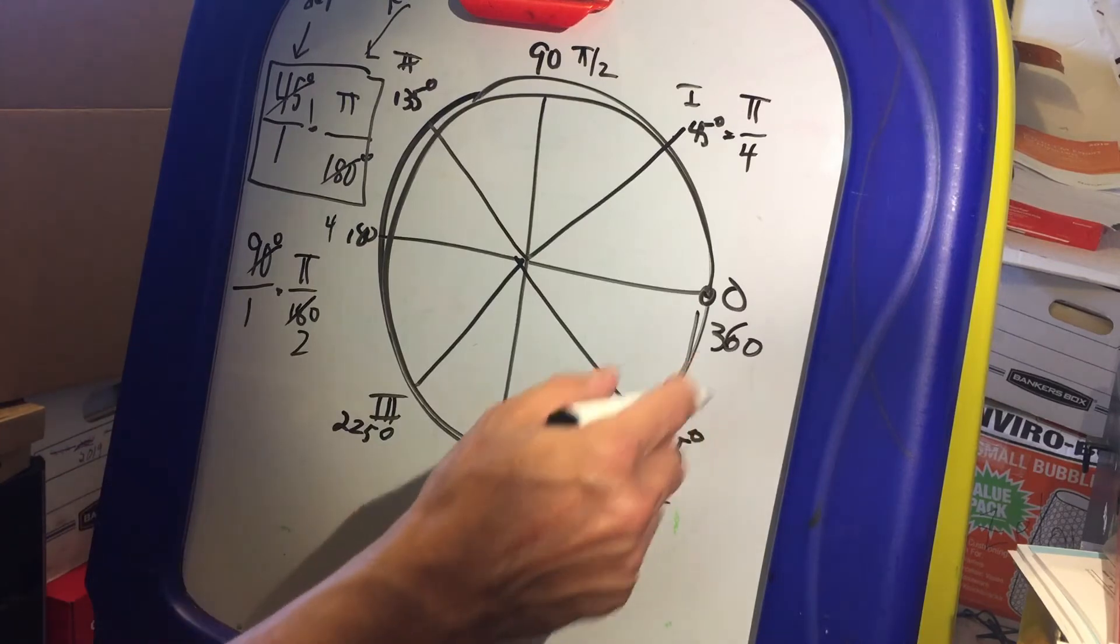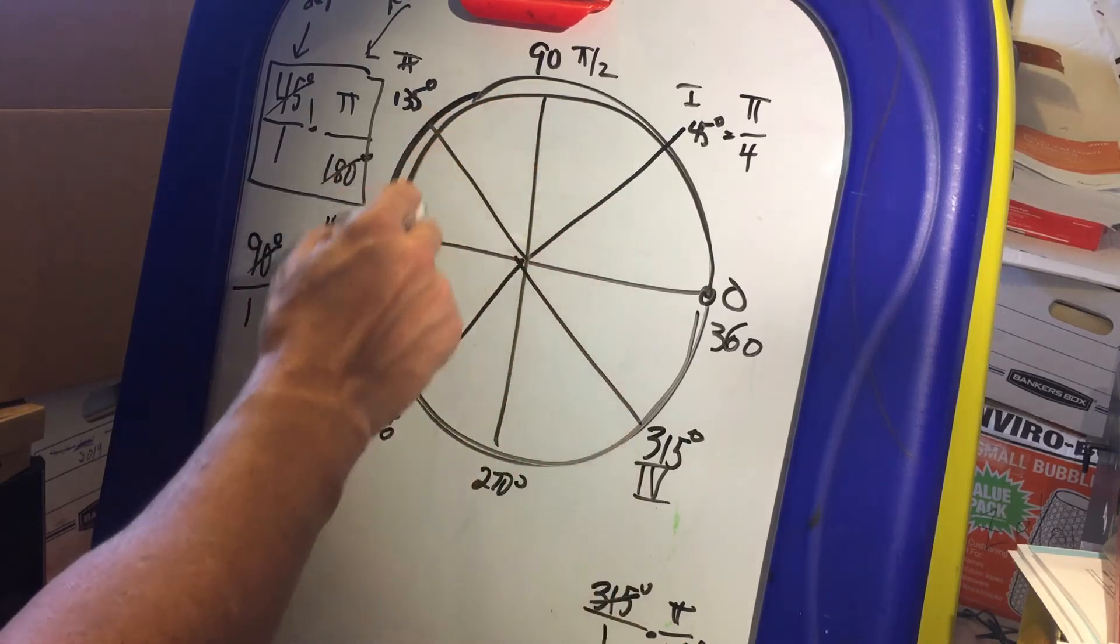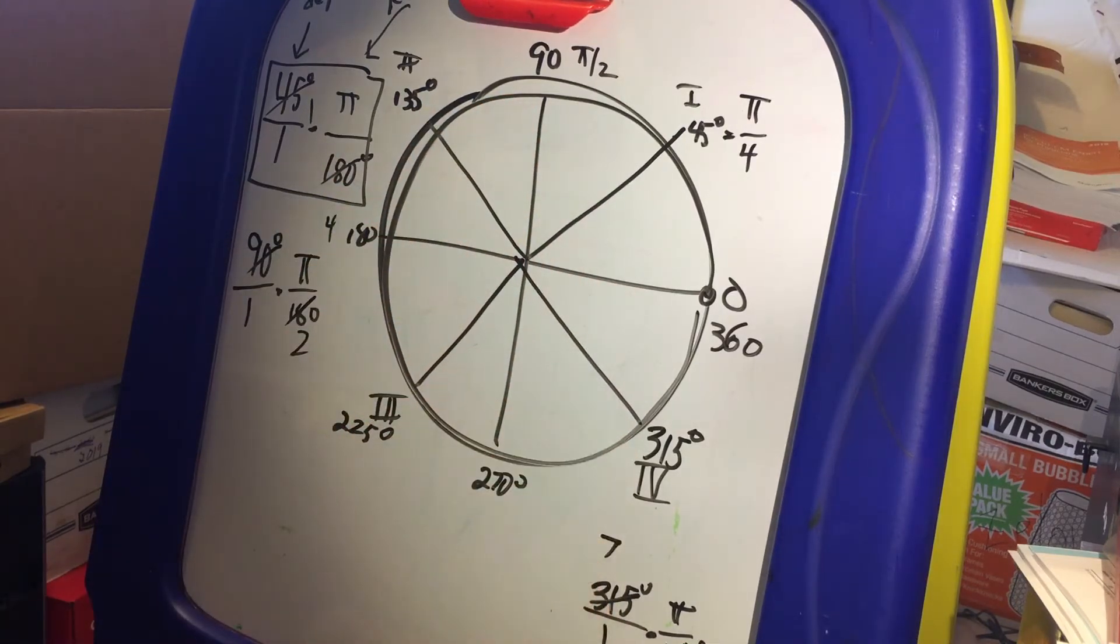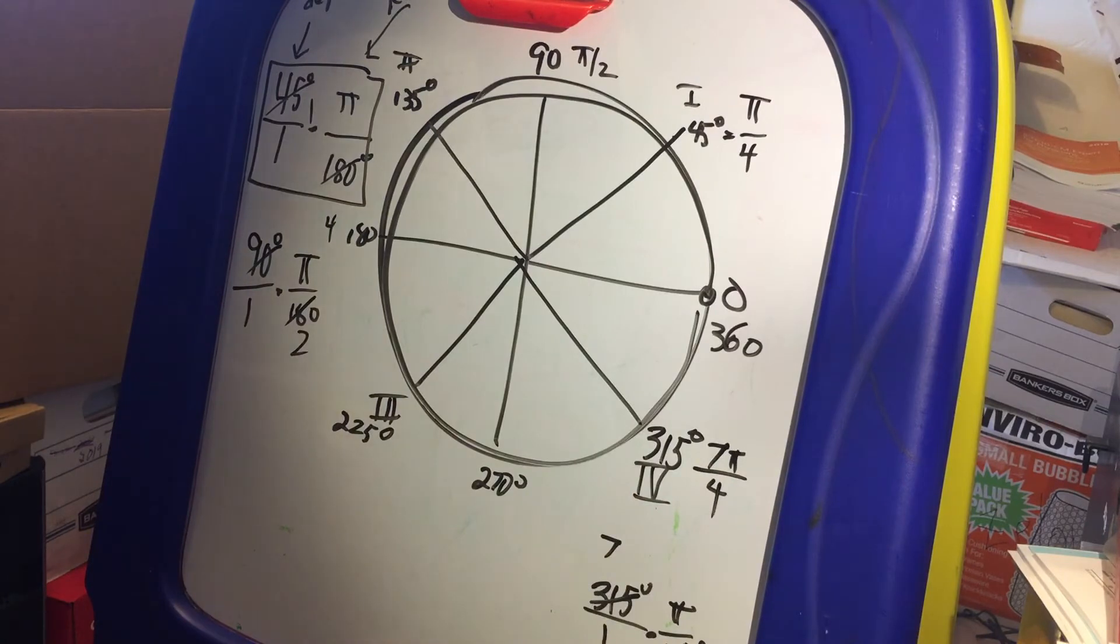We'll do one more. Let's do a big one, 315. 315 degrees over one times pi over 180, and this reduces. You can reduce this by 45, I guess. 45 goes into this seven times, and 45 goes into this four times. So seven pi over four. Okay, that's the basic conversion factors for degrees and radians.